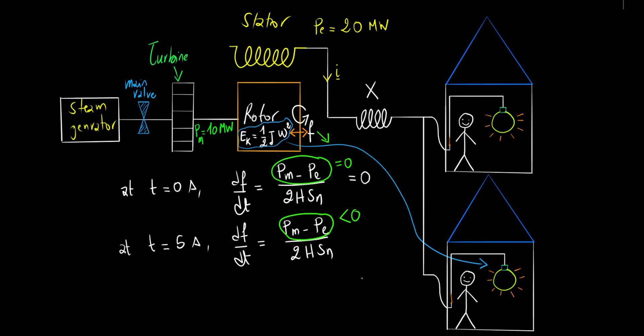The rate of this frequency drop depends on two factors: the additional power demand and your system's inertia. The higher the inertia, the slower the frequency drops, buying us valuable time to respond and restore balance. Think of inertia like your system's built-in battery, temporarily providing energy until you get things back on track.